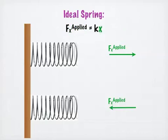In the ideal spring equation, x is the displacement from the unstrained at rest position. For example, if we are applying no force to these springs, they are at rest here in this position.